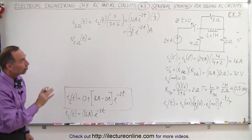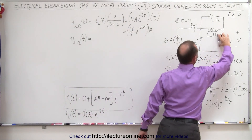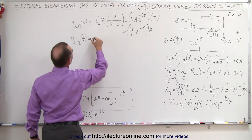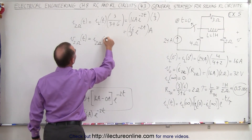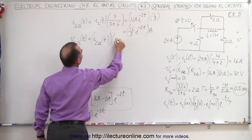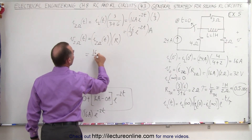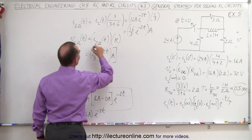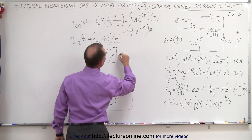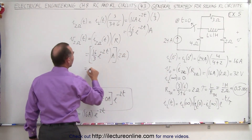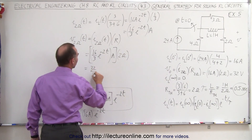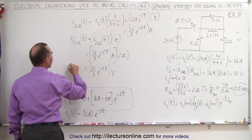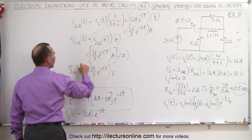Now we want to know the voltage drop across the 2-ohm resistor at any point after the switch opens up, which is equal to the current times the resistance. So that will be I across the 2-ohm resistor as a function of time, multiplied times the resistance: 16/3 e to the minus 2t amps times 2 ohms. This gives us 32/3 e to the minus 2t volts — and that's the voltage across the 2-ohm resistor after the switch opens up.